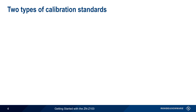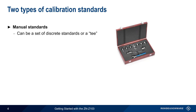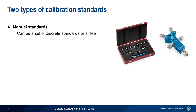There are two general categories of calibration standards. Manual calibration standards are delivered either as discrete standards or in the form of a kit that combines these standards into a compact and portable unit. These are called manual because the user manually connects and disconnects each of these standards in turn during the calibration process.